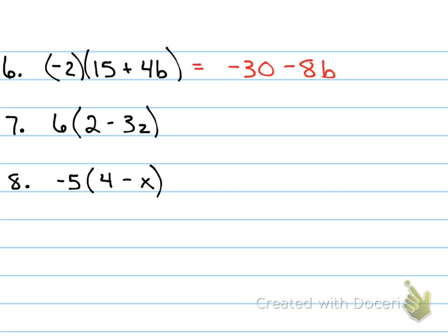All right, what about number seven? Samantha? Very good. 12 minus 18Z. What about number eight, Cole? Very close. Plus 5 what? Very good.